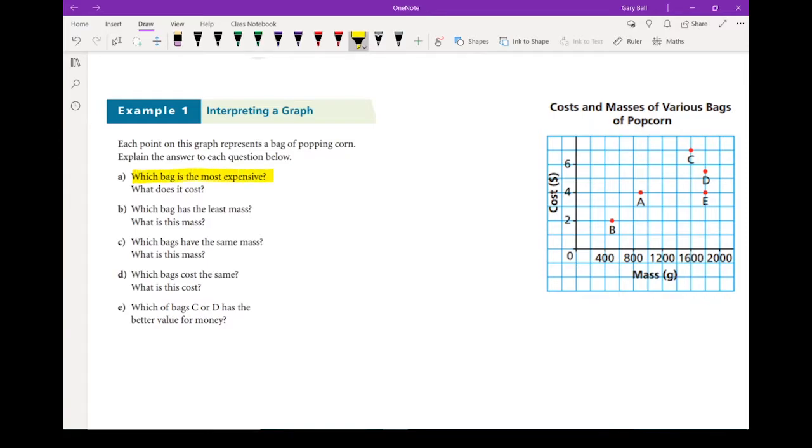The first one: Which bag is the most expensive? Well, it's the one with the highest cost. Bag C is the highest up one on the cost axis, and that looks like it is sitting at around $7. Bag C is the most expensive and it costs about $7.